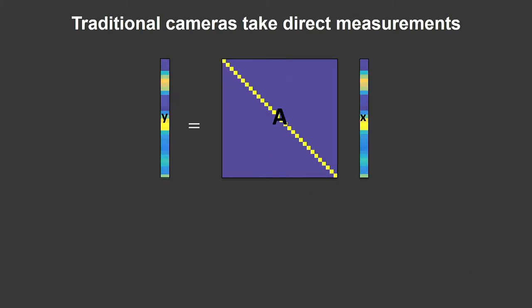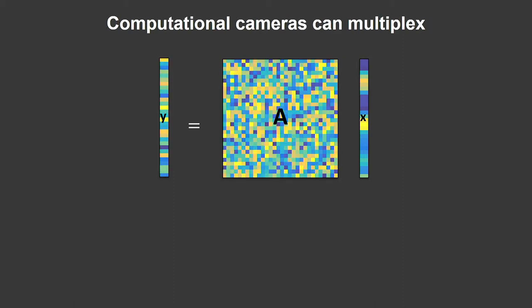The philosophy of computational imaging is to rethink how we design cameras. Traditionally, a camera takes measurements Y that are exactly what you're imaging X — so the forward model A should be the identity matrix. People have spent centuries designing fancy optics for aberration correction to get as close to an identity matrix as possible. With computational imaging, we ask: why does A need to be an identity matrix? We had it as identity because identity is easy to invert — you don't have to do anything.